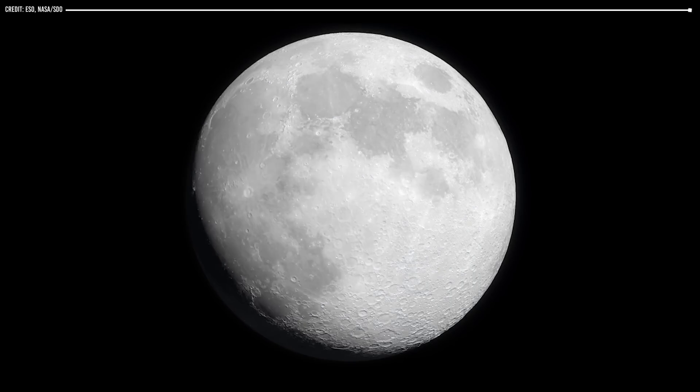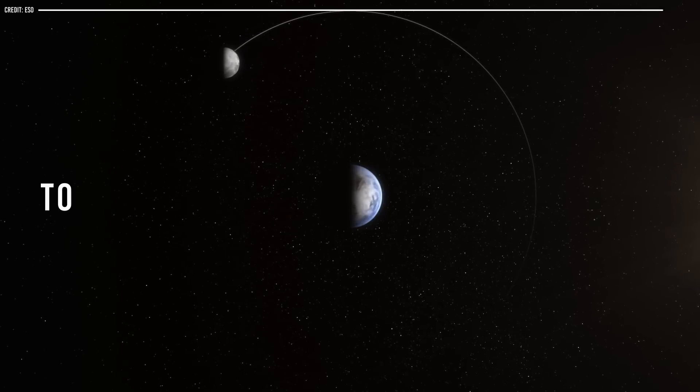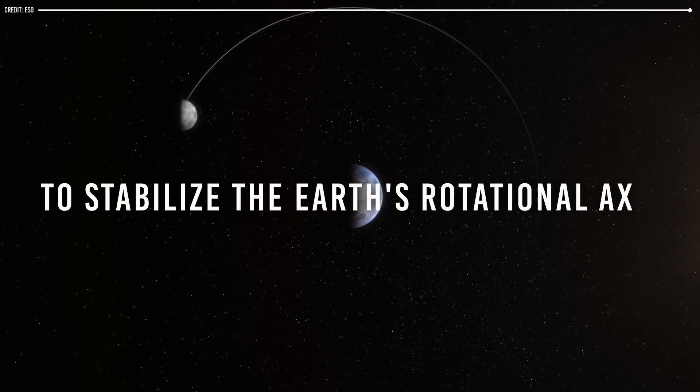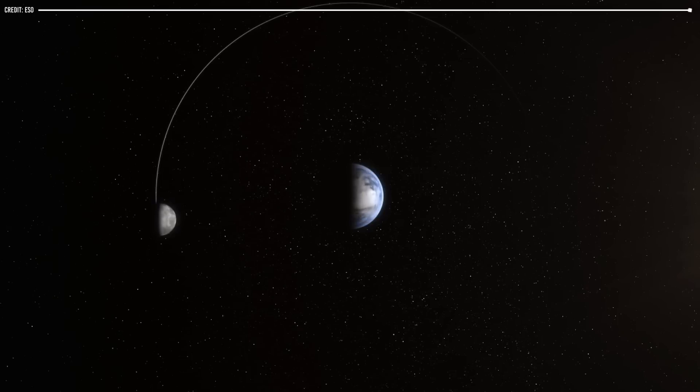The gravitational interactions between the Earth and the Moon have helped to stabilize the Earth's rotational axis, preventing large changes in its axial tilt and helping to maintain a stable climate over long periods of time.